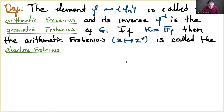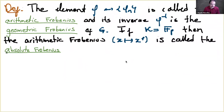Why the distinction between arithmetic and geometric Frobenius? The arithmetic Frobenius comes from arithmetic — from finite fields. The geometric Frobenius is its inverse, and the reason for this name is that when we extend the Frobenius to geometry — in particular to cohomology, specifically étale cohomology — maps get reversed. The Frobenius acting in the right direction on étale cohomology comes from the geometric Frobenius; that is why it is called geometric.